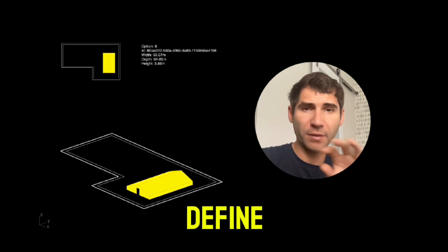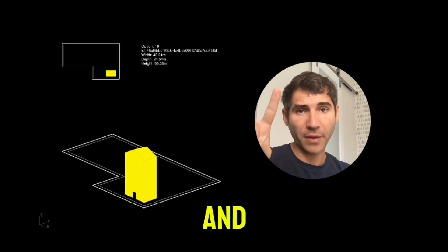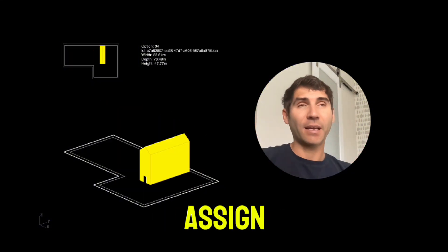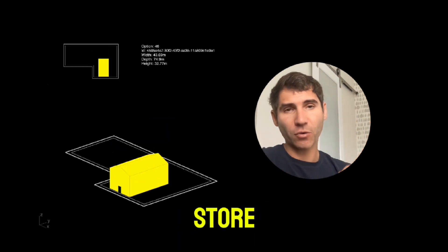With brute force you define the parameters. In this case you have the position of the house and dimension of the house. Those are your random parameters. The script is going to assign those random parameters multiple times and then we're going to store them.